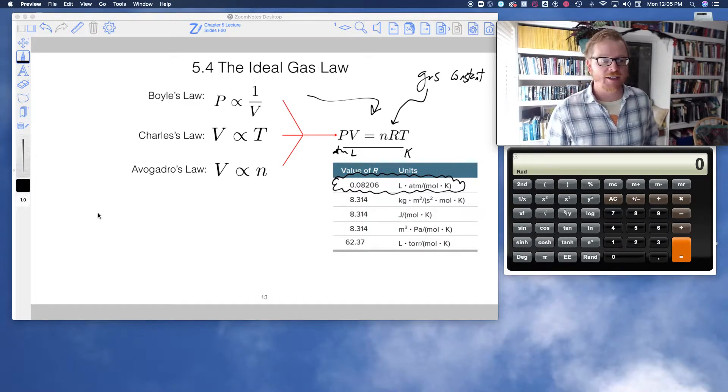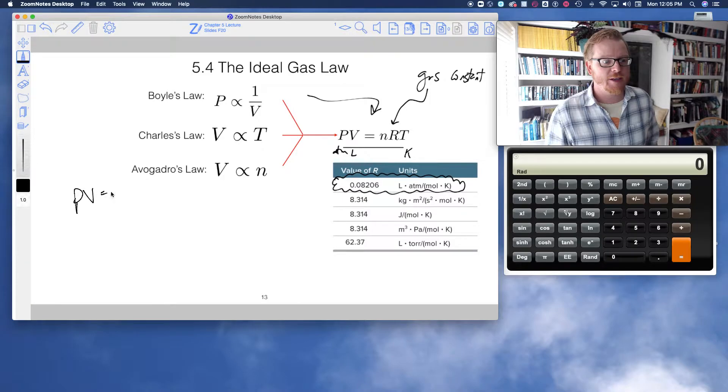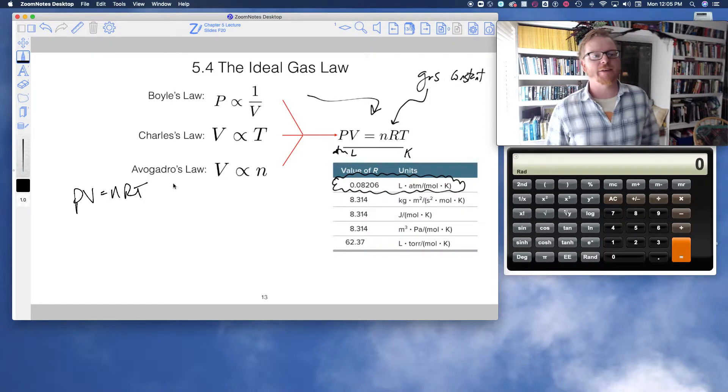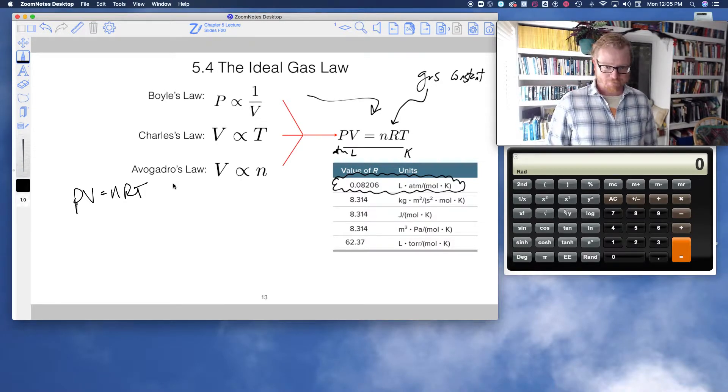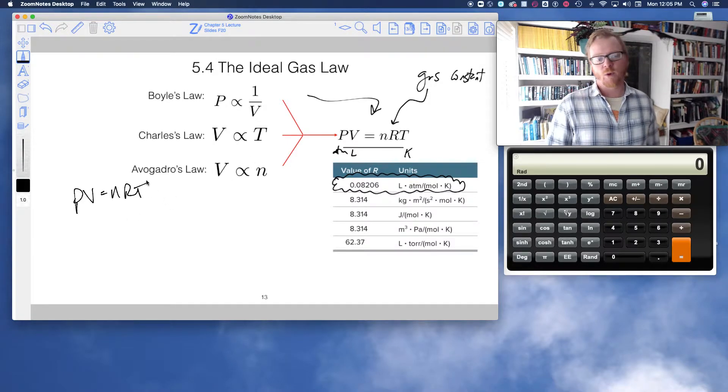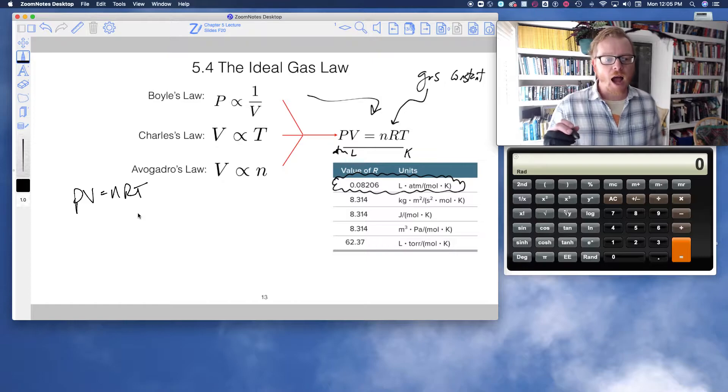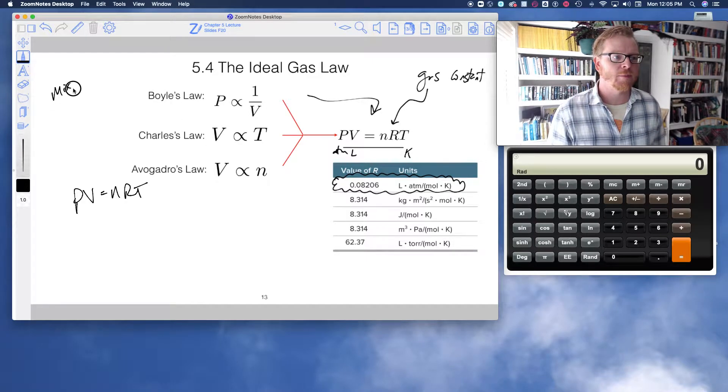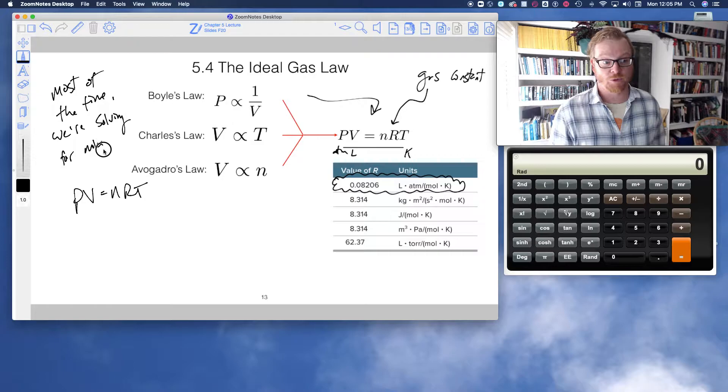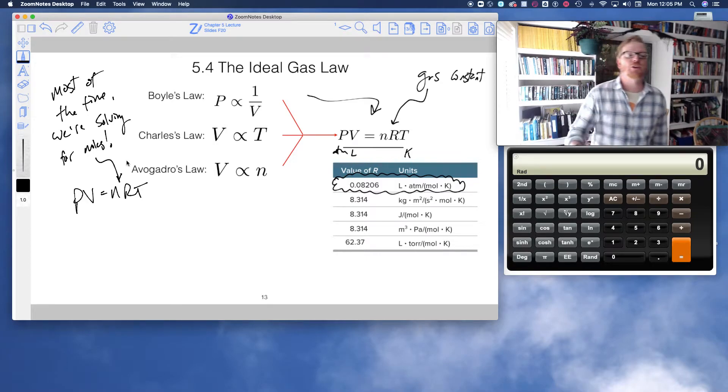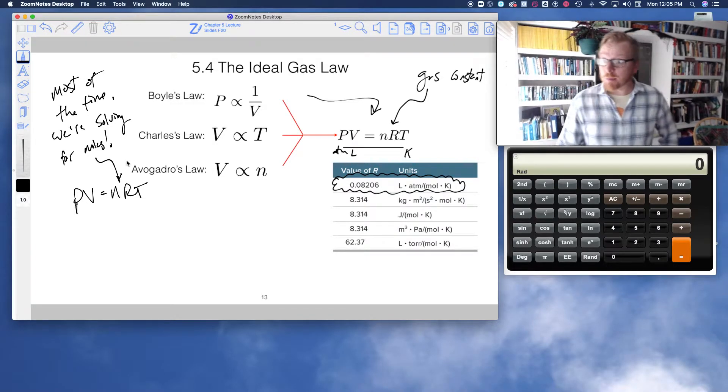Okay, so we have this ideal gas law, PV equals nRT. Famously, people call it PIVNRT, PV equals nRT. And what I want to point out, when using this equation, most of the time we're solving for moles, right? Because this is a chemistry class, and so when we start using this equation and problems, that's really what we want.